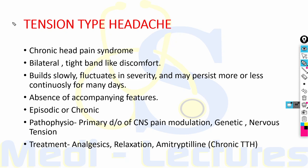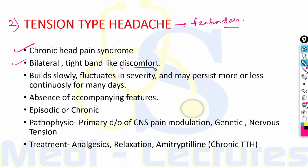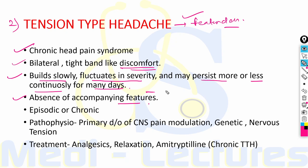The most common cause of primary headache is tension type headache, also known as featureless headache due to the absence of features present in migraine. It is a chronic head pain syndrome. Pain is usually bilateral and patients complain of tight band-like discomfort around the head. Pain builds slowly, fluctuates in severity and may persist more or less continuously for many days. Absent features include nausea, vomiting, photophobia, phonophobia, throbbing and aggravation with movement — which can differentiate it from migraine.